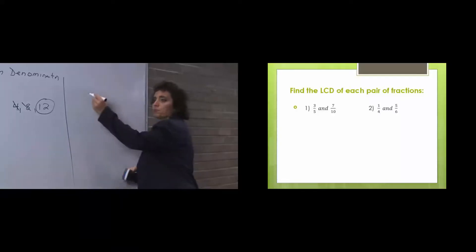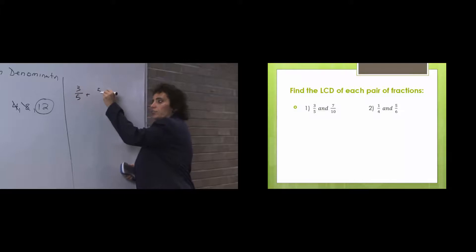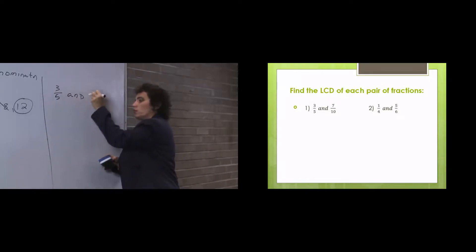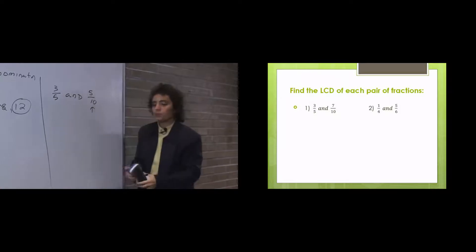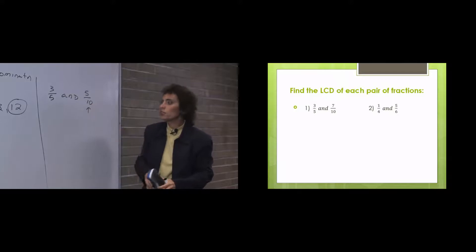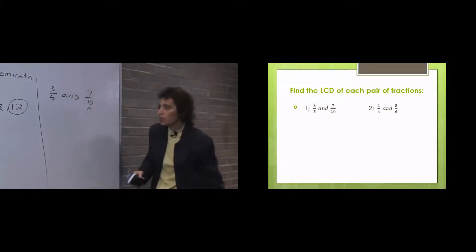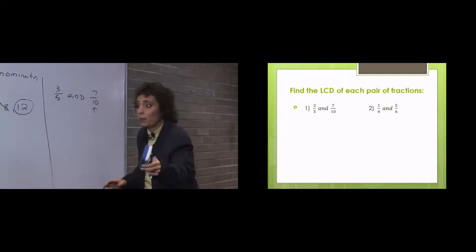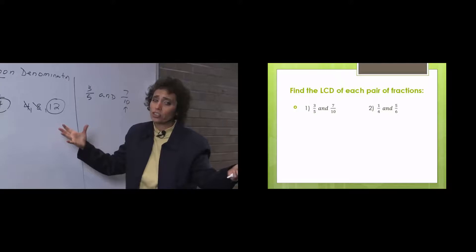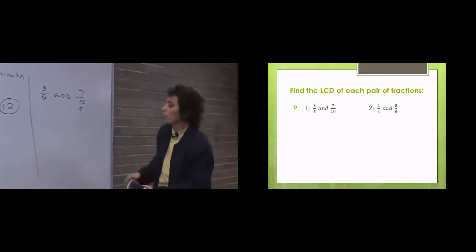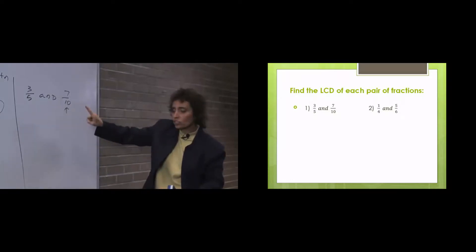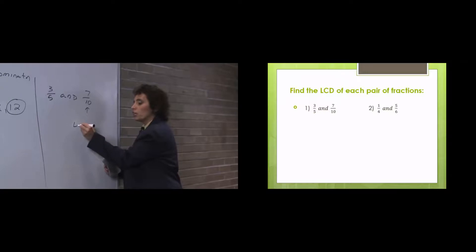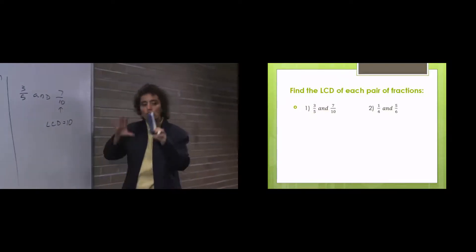First thing you do is look at the biggest number — does 5 divide into 10? When you do this, you're not looking at the numerators, you're only looking at the denominators — least common denominator. When you get a least common denominator, you need at least 2 fractions. You look at the biggest number and ask: does the little number divide into the bigger number without a remainder? The answer is yes. If the answer is yes, that is the least common denominator. So your least common denominator here is 10. You're done.